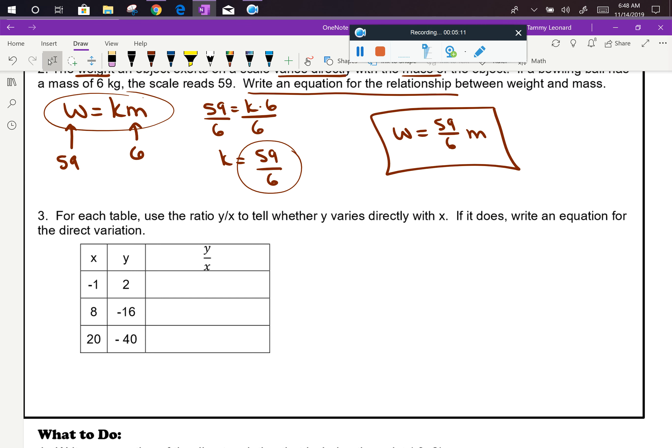Number three says for each table, use the ratio y over x to tell whether y varies directly with x. Now let's step back for a minute and think about why we can use that particular ratio. Remember we have y equals kx. That's a direct variation. That's the basic setup.